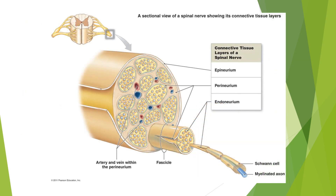Let's consider now the anatomy of a nerve fiber. We have the axon, and it's surrounded by the Schwann cell's myelin sheath, and around that is the endoneurium.